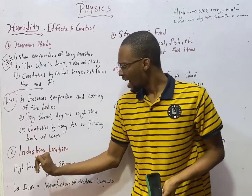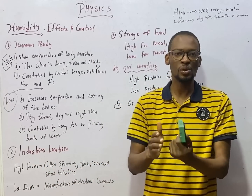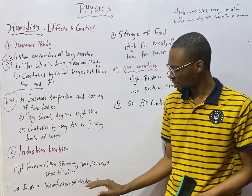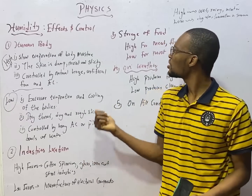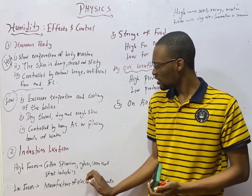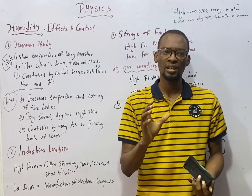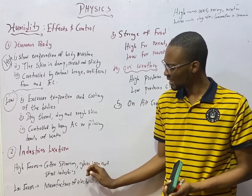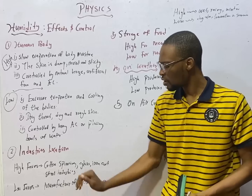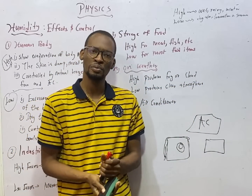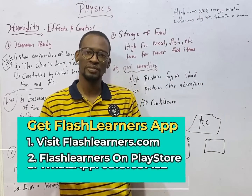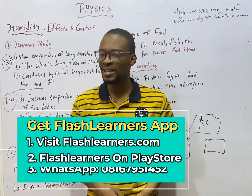On industries, high humidity favors cotton-spinning industries because it helps the fibers hold together. High humidity also favors glass, iron, and steel industries because these materials get very hot, and the moisture helps them cool faster. However, too much humidity causes rusting, so it must be moderate. Low humidity favors the manufacture of electrical components, as moisture and rain cause problems for electrical equipment.